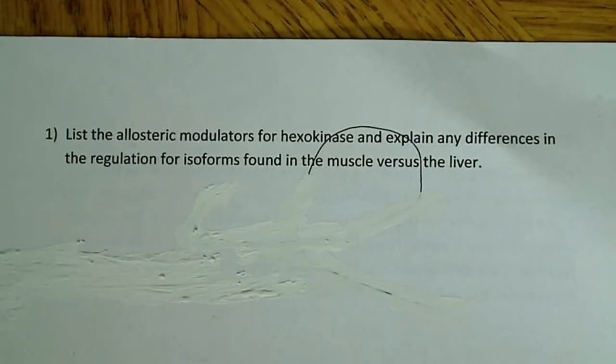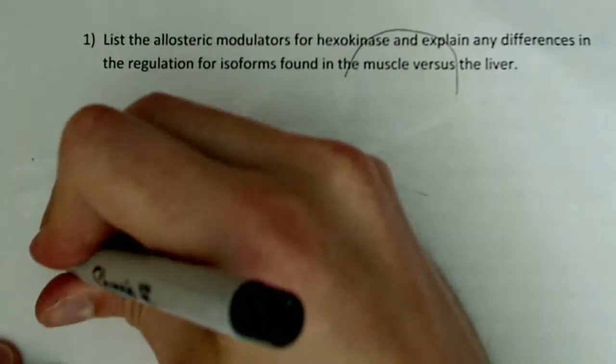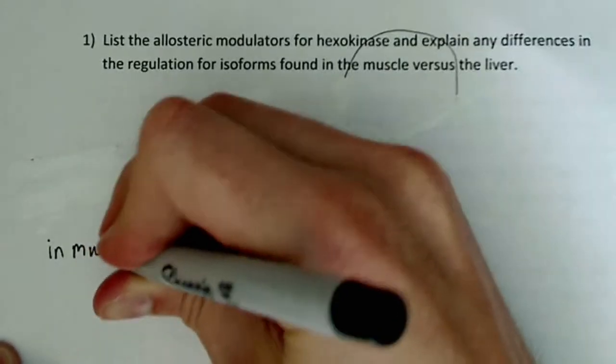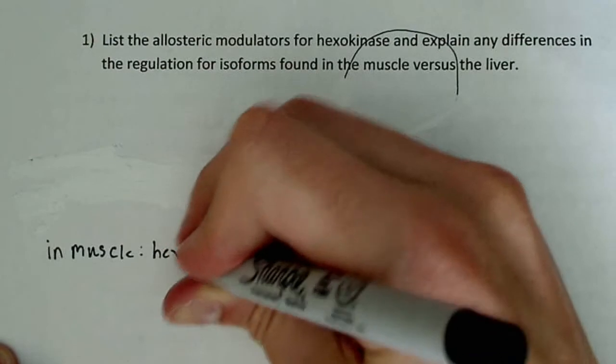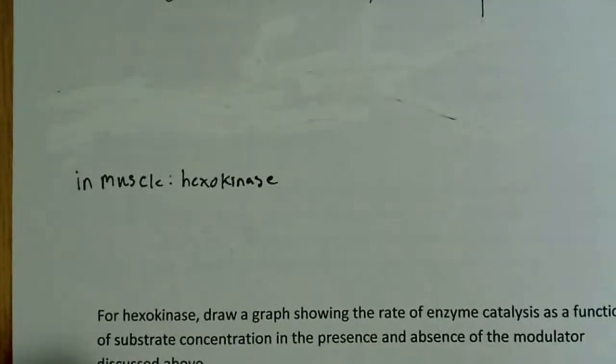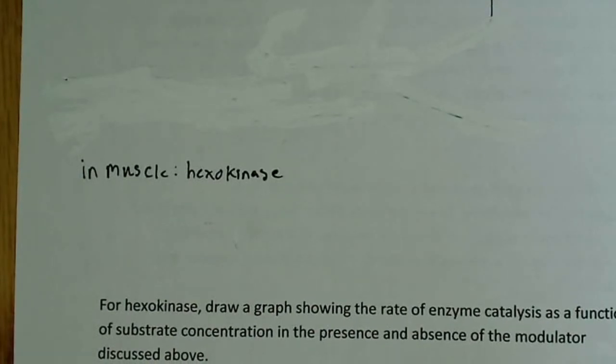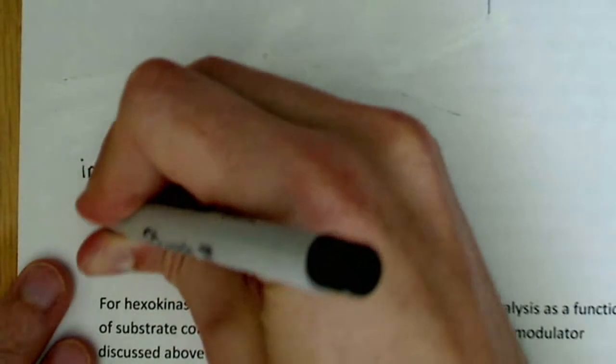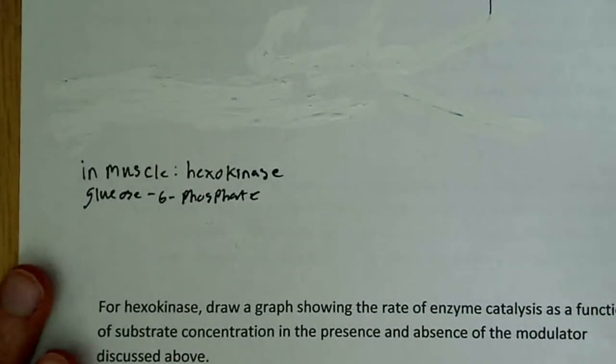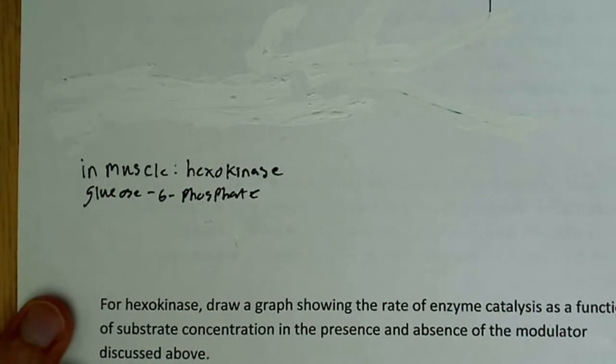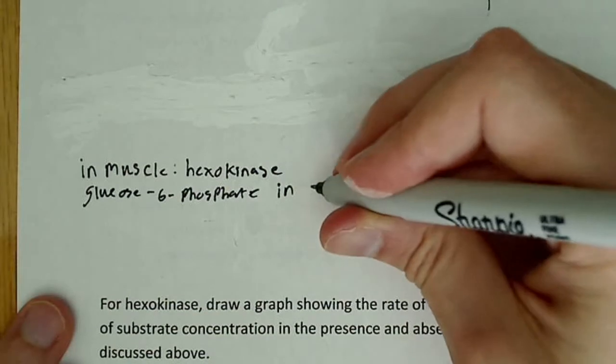And they want to know in this question what are the differences. So the first thing I want to do is say in the muscle, we have hexokinase, and there's several things that are both allosteric inhibitors and activators. First thing I want to write down is glucose 6-phosphate. And glucose 6-phosphate is the product of the hexokinase reaction, it's the first reaction in the glycolysis pathway. And glucose 6-phosphate inhibits hexokinase.